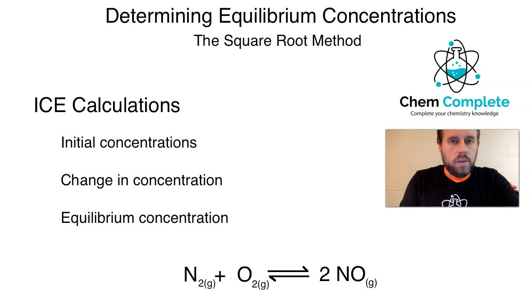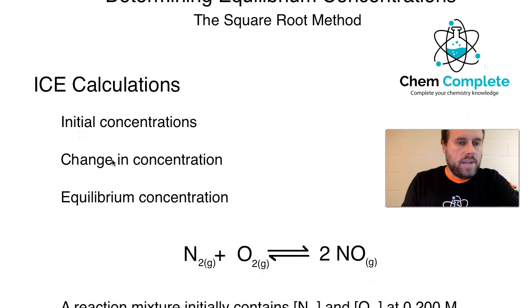For determining equilibrium concentrations, this may be the first time you've been hearing about or have been exposed to ICE calculations. So ICE is an acronym that is going to be used to represent the following. The I is initial concentrations. So these are the concentrations that you would initially be starting with. We're looking at our reactants in this case.